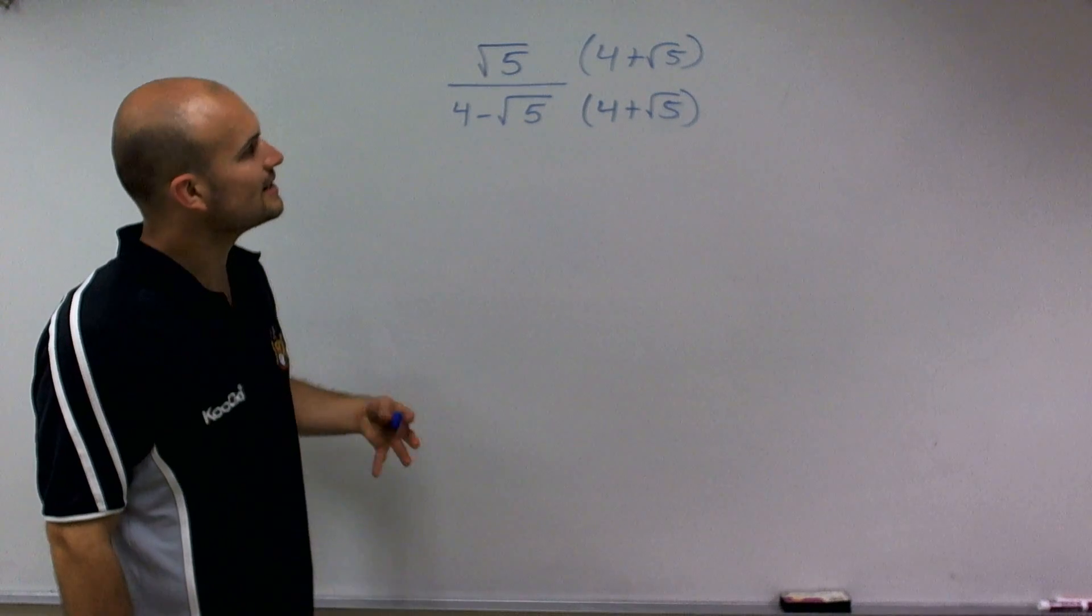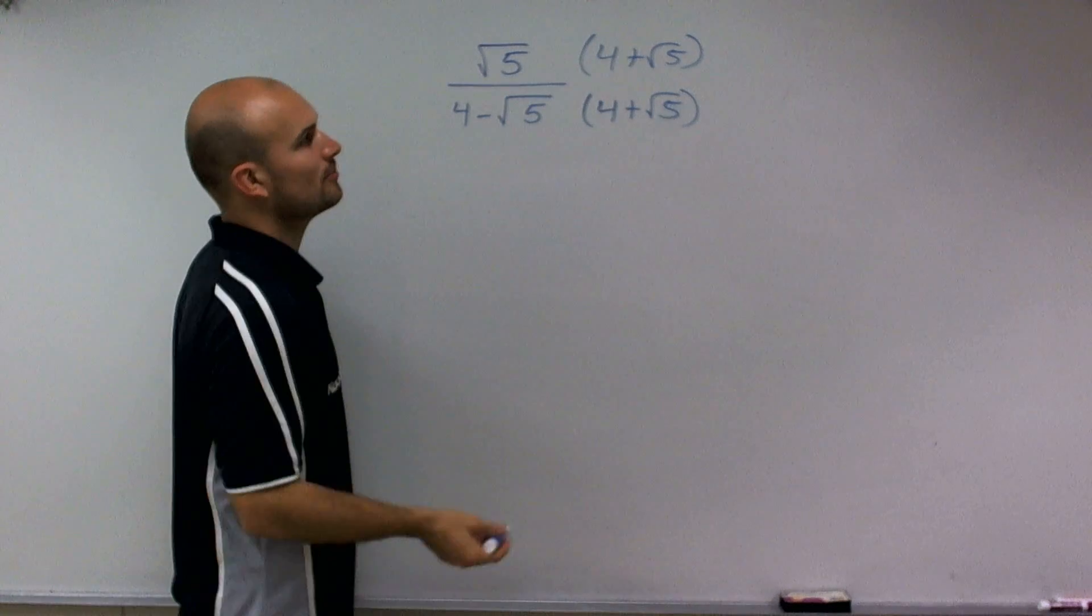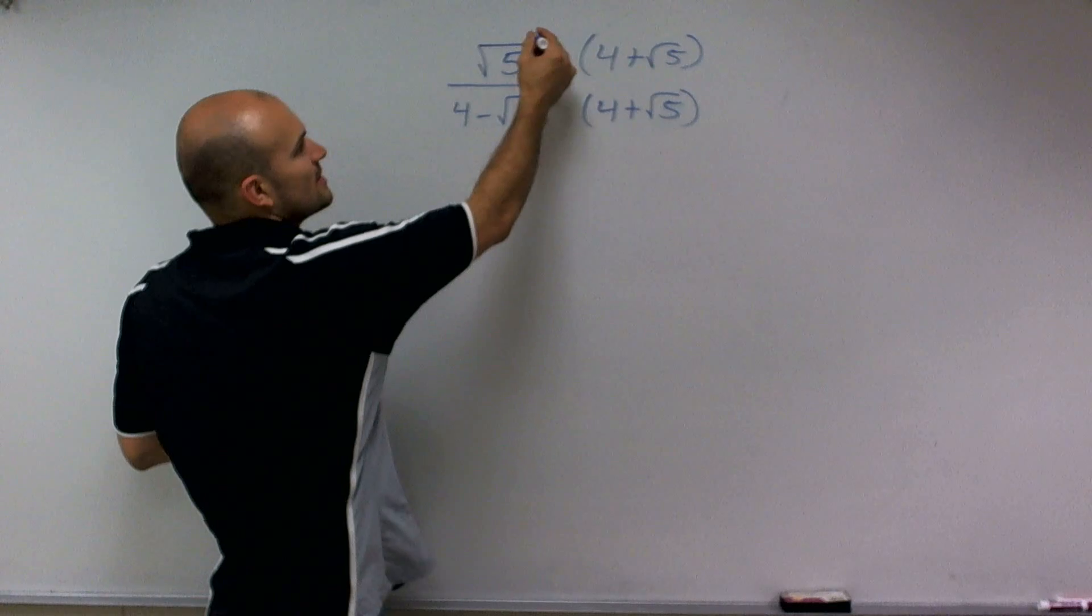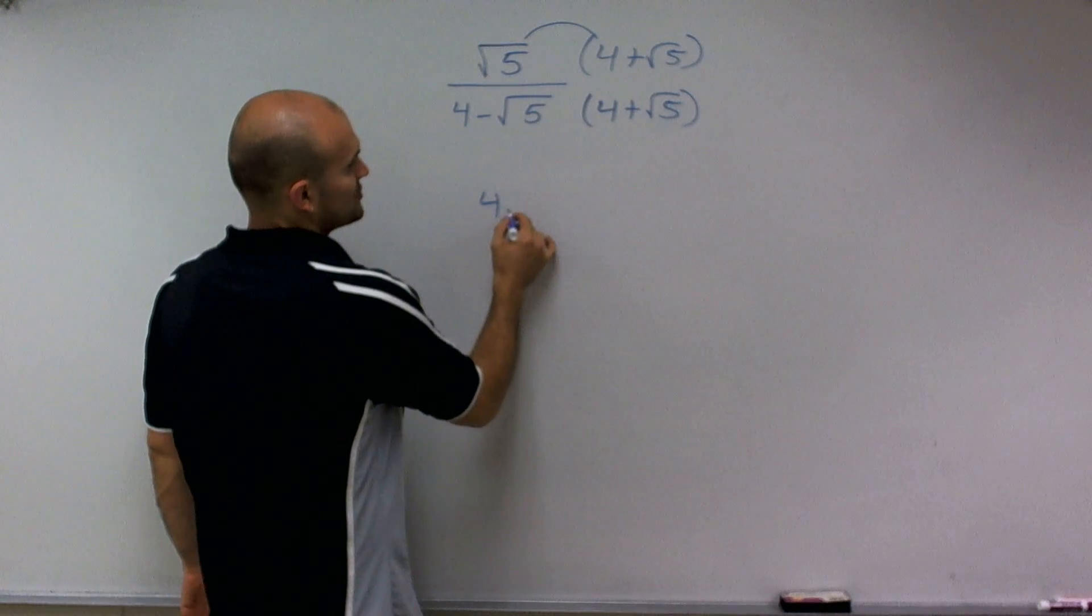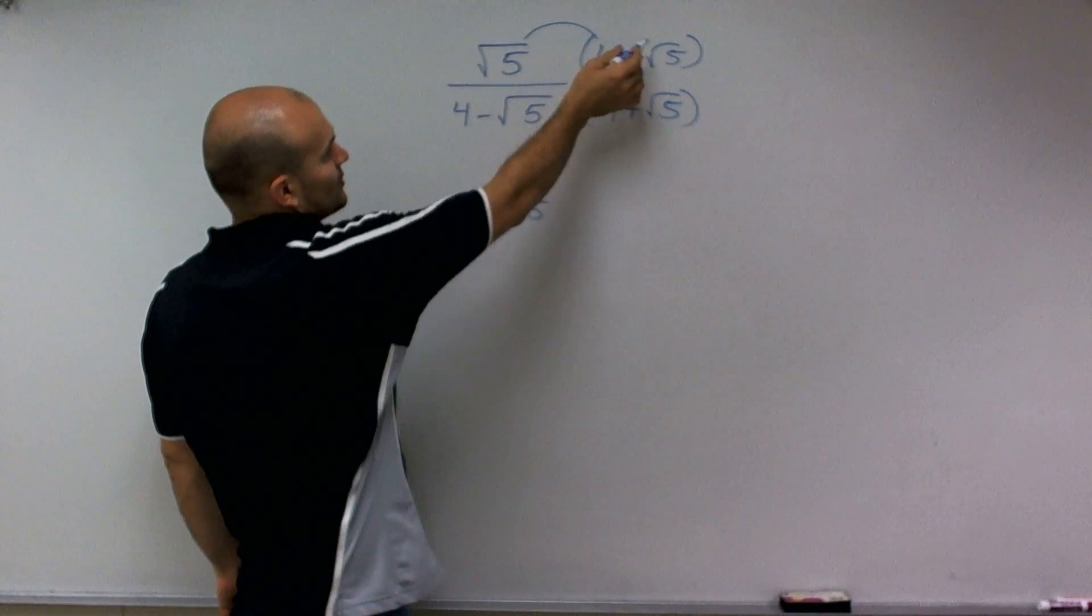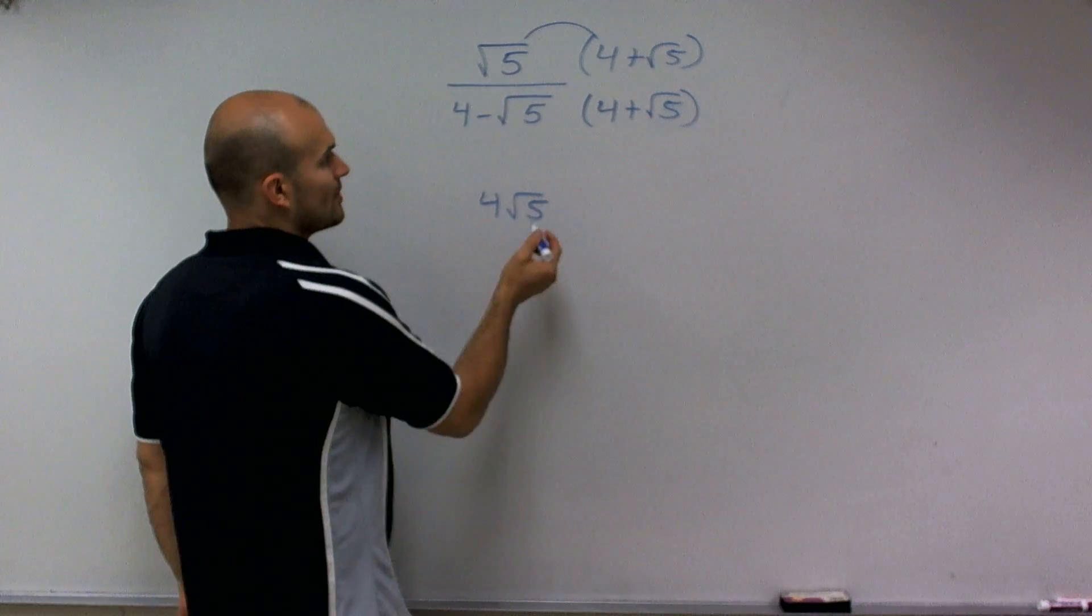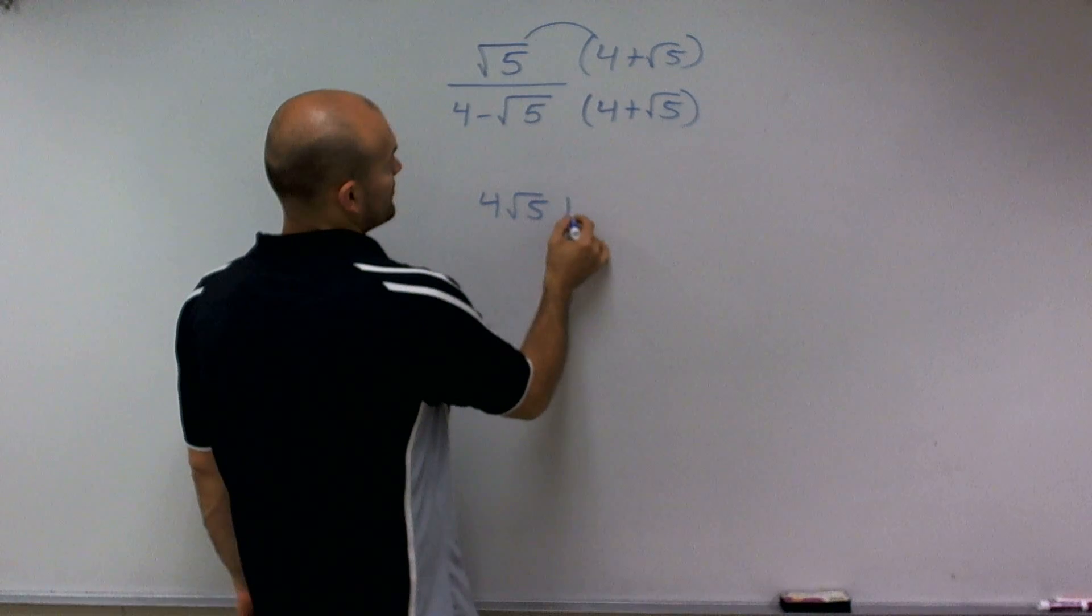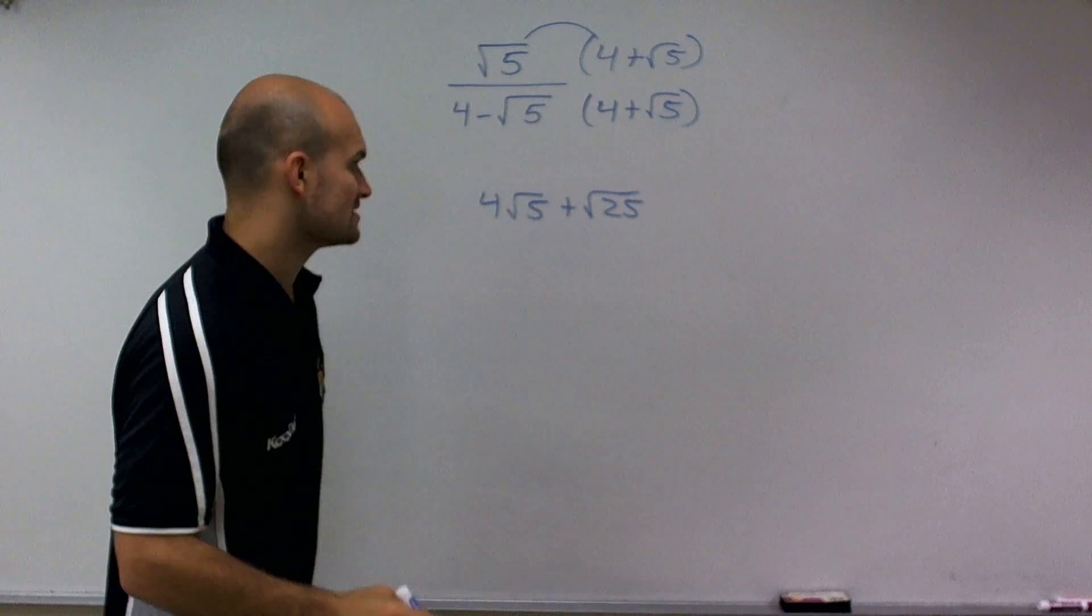So now the next thing I notice is I can just multiply the top. When multiplying a radical times a binomial, it's just going to be like your like term. 4 times square root of 5 is just going to produce me 4 times square root of 5. However, when I'm multiplying a radical times a radical, I can multiply the radicands, the numbers inside and under your root. So therefore, that's going to produce me plus the square root of 25. And I'll get into simplifying this in just a second.